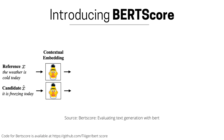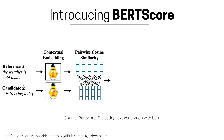The idea behind BERTScore is to understand the meaning of what you have generated and what was supposed to be generated, and then compare your generation against the ground truth. Here we have a reference X and a candidate X-bar, which we pass through the pretrained BERT model that generates a contextual embedding for each of the words at the output.